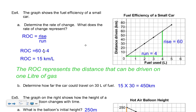Rise over run gives you 15. Where do the units come from? The rise is measured in kilometers — really 60 kilometers — and the run is 4 liters, but I just stick the units at the end. So that's 15 kilometers per liter, which represents how far you can go on one liter of gas. If your car only had 30 liters, how far could you go? If you can go 15 kilometers on one liter, then for 30 liters you'd multiply 15 by 30 and go 450 kilometers.